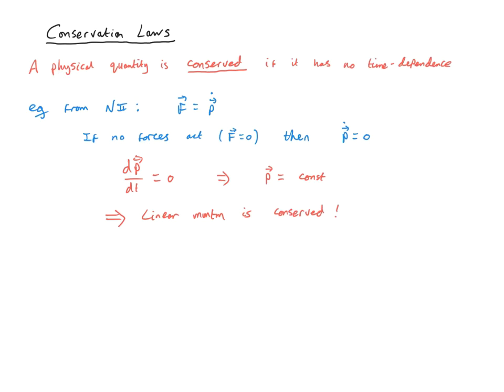Since F = p-dot is a vector equation, we can apply this condition for each component separately. In particular, if Fx = 0 then px is constant — the linear momentum along the x-direction is conserved. So conservation of momentum holds component by component. I could imagine a force acting along the y direction, and still the momentum along x would be conserved.